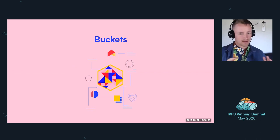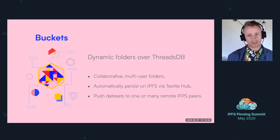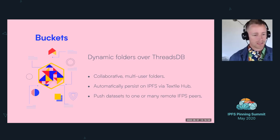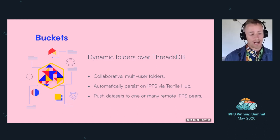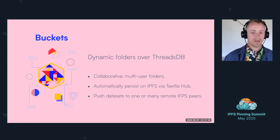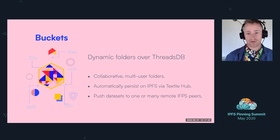That brings me to the next piece: Buckets. Buckets are really the first application built on ThreadsDB. What we started realizing is that once you have a thread — this lightweight database moving data around with multiple users collaborating — one thing you might want is to move around dynamic folders on IPFS. Buckets are basically a thread that tracks a changing DAG. The head of the DAG is in the metadata of the instance in the database, and as that instance changes, the thread pushes those updates to all peers collaborating on that folder and to any services that want to replicate and make that data available on IPFS.